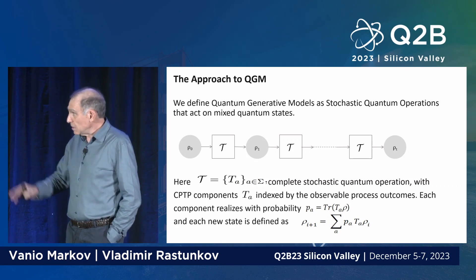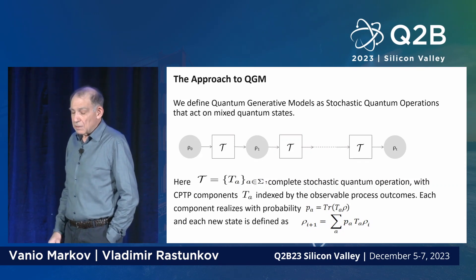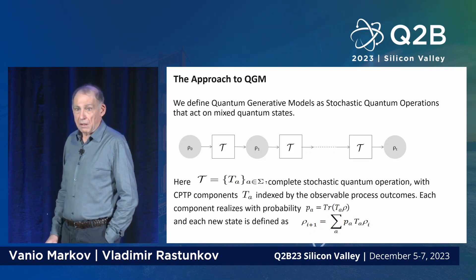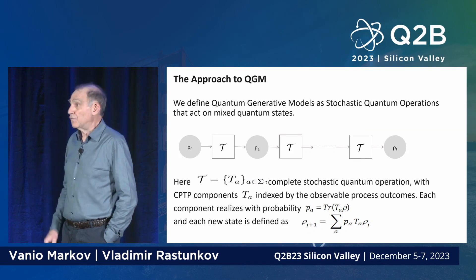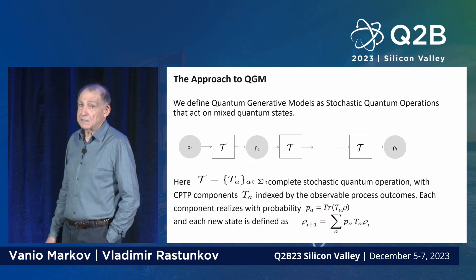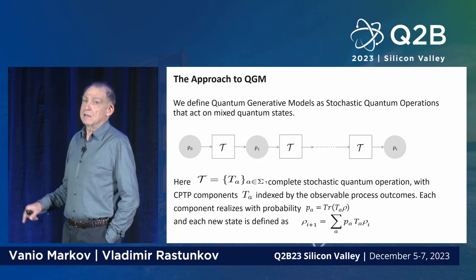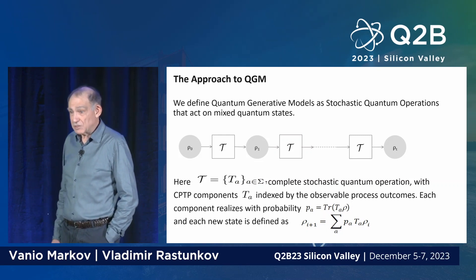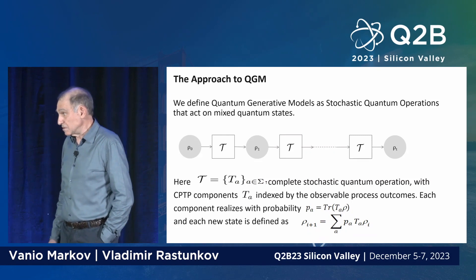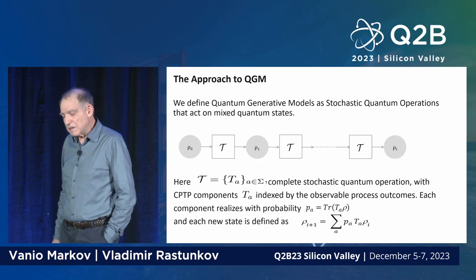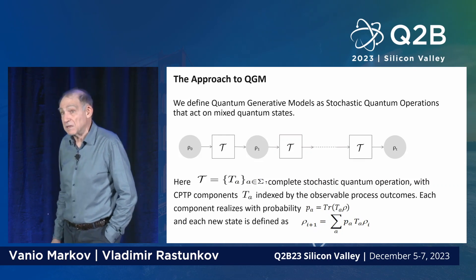All the states we demonstrate and use are mixed states — probabilistic combinations of pure states — simply because our systems can be in many states at the same time, and also because we don't have enough information to define the real state of the system. So whenever I talk about the state of the system, I mean the mixed state, which is represented by the density matrix of the system.